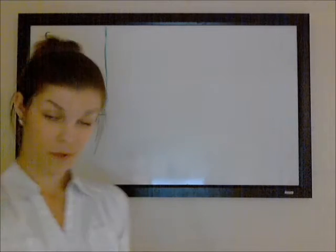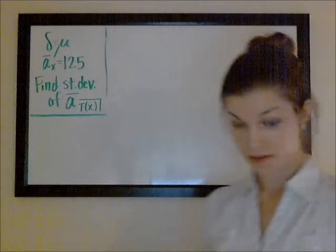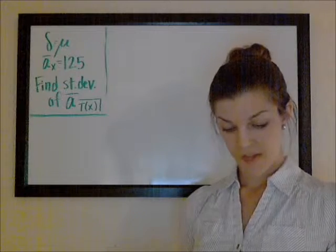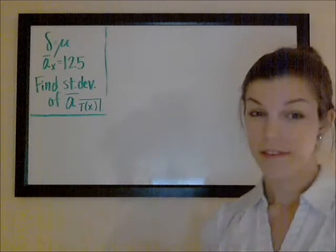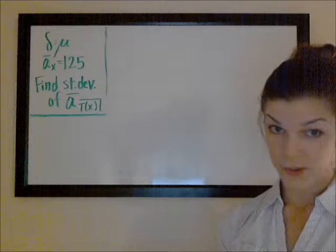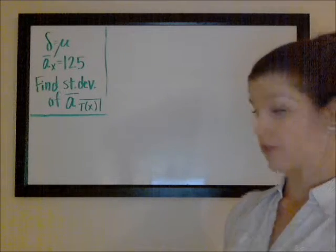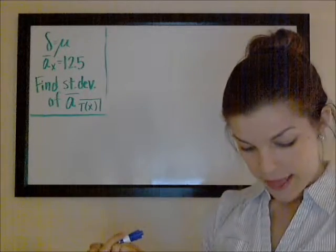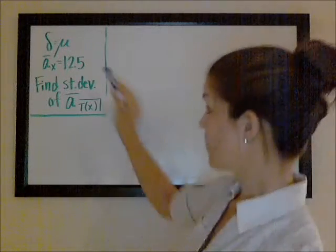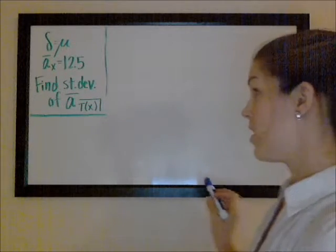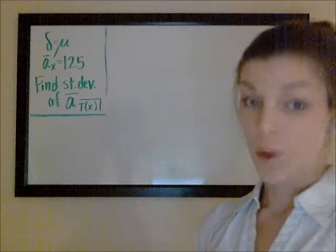This is a problem from a previous exam. They tell us that for a continuous whole life annuity of 1 on x — so you know that's going to be little a-bar x — T(x) is the future lifetime random variable for x. The force of interest and the force of mortality are constant and also equal to each other, which is certainly going to be helpful. And a-bar x, the actuarial present value of a continuous whole life annuity on x, is 12.5. They want us to find the standard deviation of the true present value of this continuous whole life annuity on x.